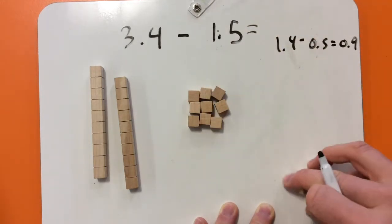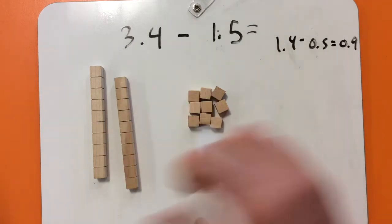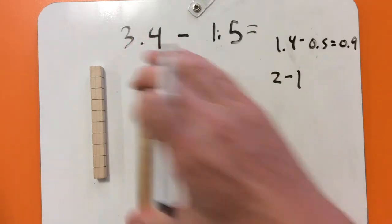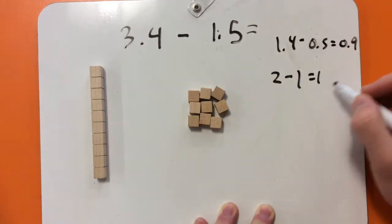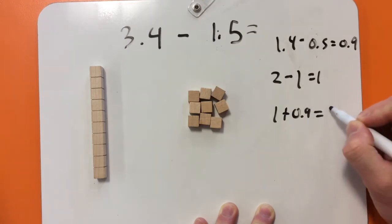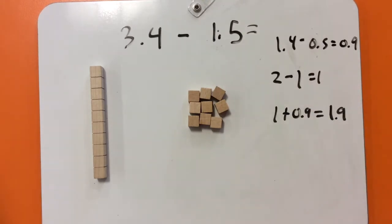And then I'm going to take, I've got two left, so two, take away one, and that is one. So one plus 0.9 equals 1.9.